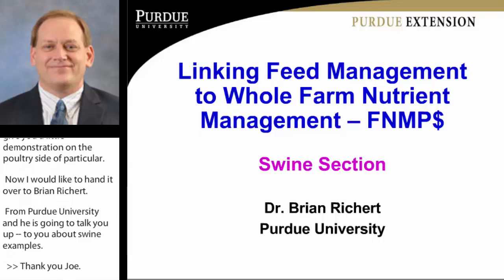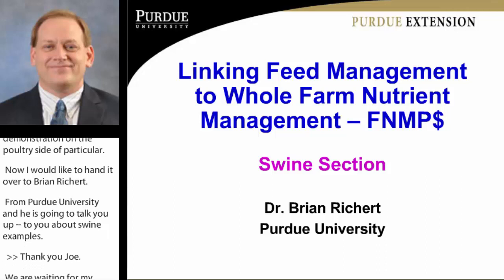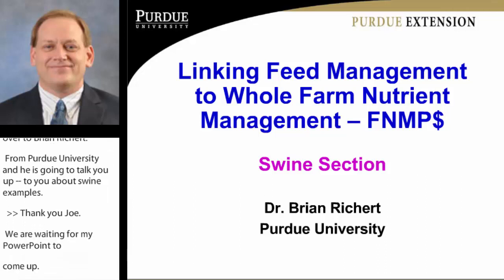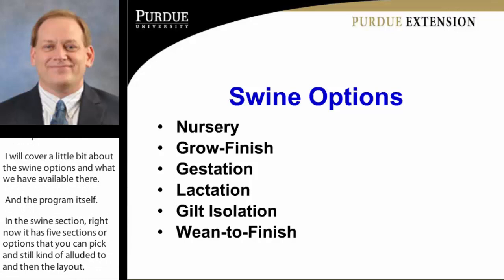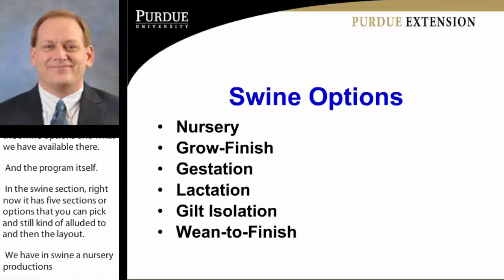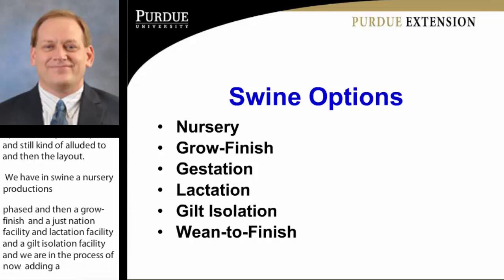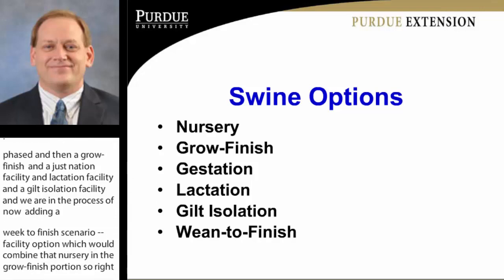I'll cover a little bit about the swine options and what we have available in the program. In the swine section, right now it has five sections or options that you can pick: a nursery production phase, a grow-finish, a gestation facility, a lactation facility, and a gilt isolation facility. We're in the process of adding a wean-to-finish scenario, which would combine the nursery and the grow-finish portion — probably one of the most popular ways of housing market pigs in the swine industry.